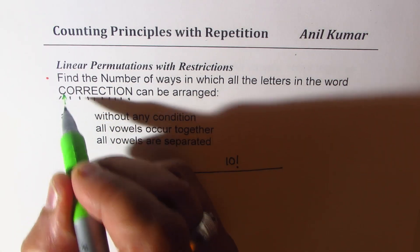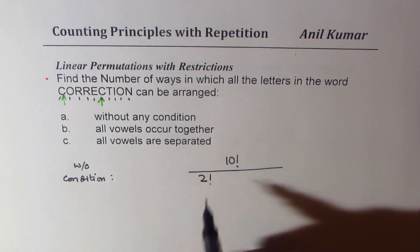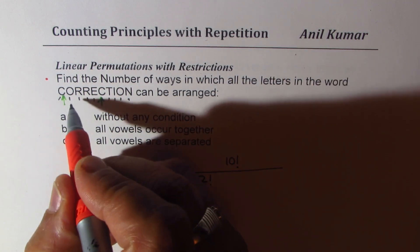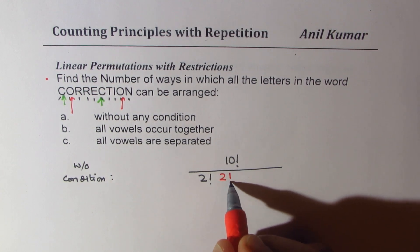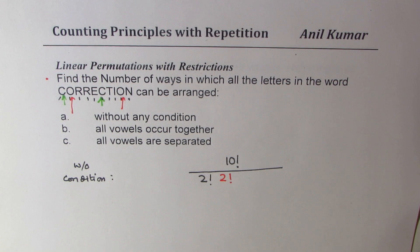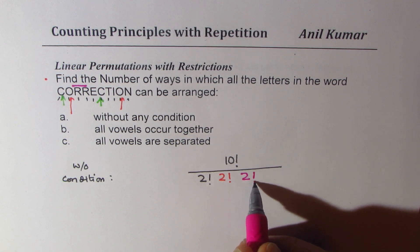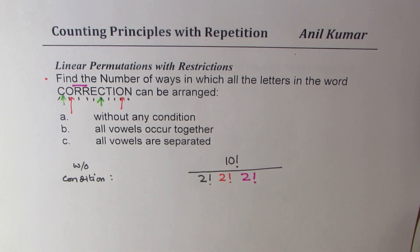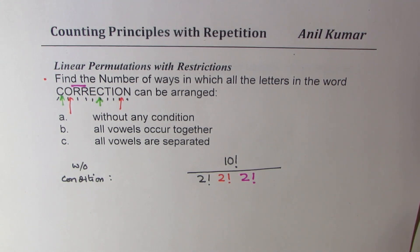We have two C's, so divide by 2 factorial for the C's. As far as O's are concerned, we have two O's also, so we'll divide by 2 factorial for O's. And we see two R's together, so divide by 2 factorial. Whatever letters are repeated, since those arrangements with or without meaning will be exactly the same, we have to divide by those factorials. So it's 10 factorial divided by 2 factorial divided by 2 factorial divided by 2 factorial.